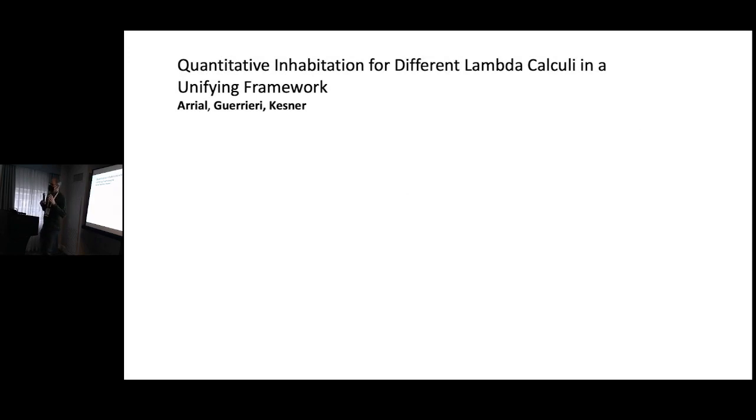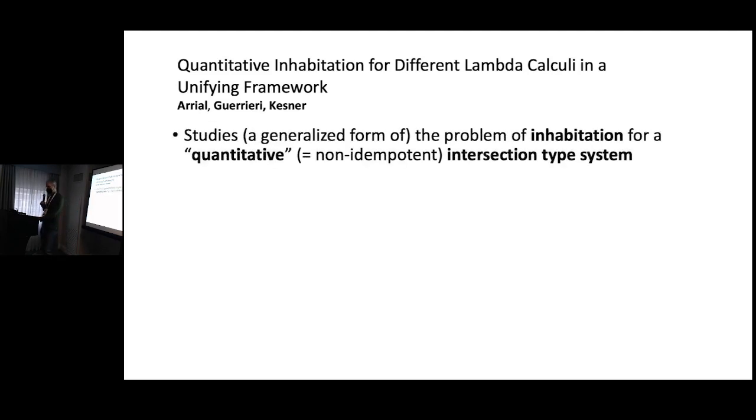Third paper, on the other side of the fence, so I said that back in the old days, there was this, there was the pure lambda calculus people and there were the programming language people. We've seen two programming language people papers, and now we have a pure lambda calculus paper. These authors are studying what they call quantitative inhabitation for, well, they study the problem of inhabitation for a so-called quantitative intersection type system. By quantitative, they mean non-idempotent, that is a type system in which T intersect T is not the same type as T.